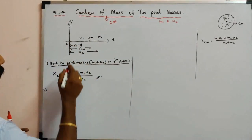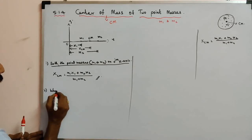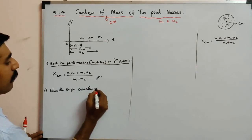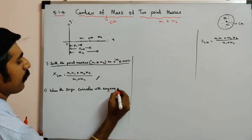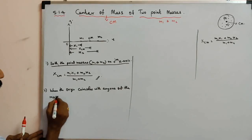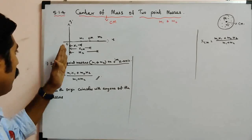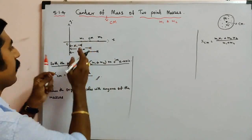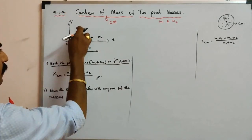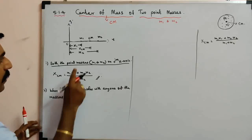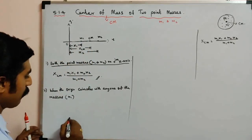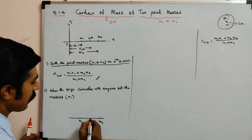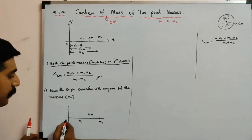The second case is when the origin coincides with any one of the masses. Here, origin coincides with M1. The diagram shows M1 at the origin, M2 on the positive x-axis. The center of mass CM is at a distance XCM along the x-axis.